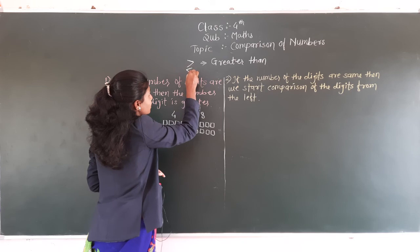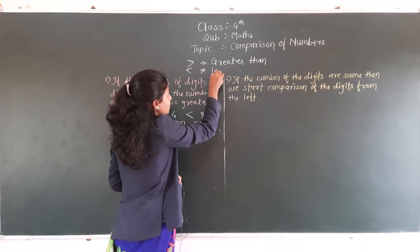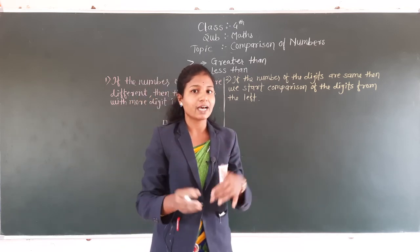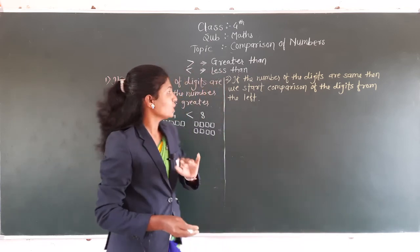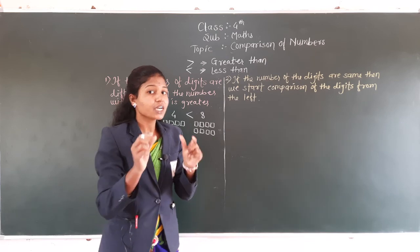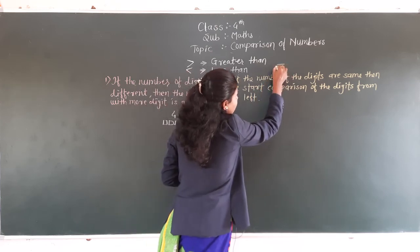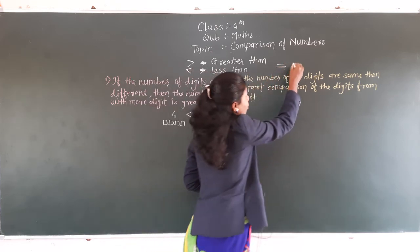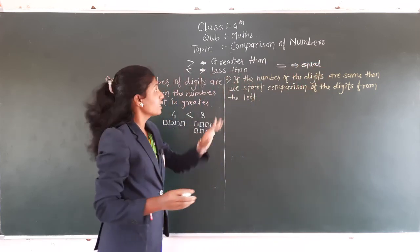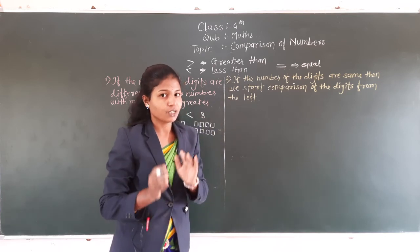The second sign is this one. यह sign किसका है? This sign is less than. If any number is smaller than another number, that time we use this sign. यह sign less than का है. And the next one is the equal sign. If the numbers are equal — अगर दोनों numbers same हों, तो हम यह sign use करते हैं — और इसको हम equal बोलेंगे. You should remember these signs. आपको comparison of numbers solve करते समय यह signs याद रखने हैं.